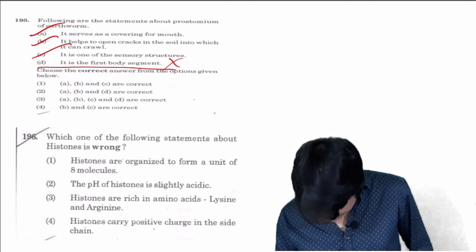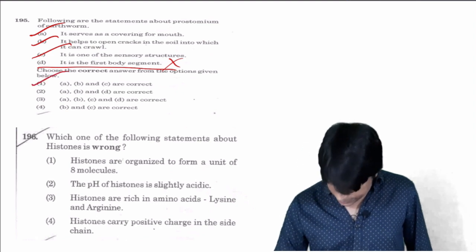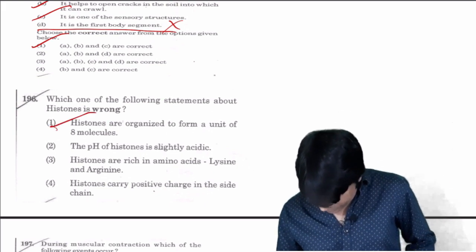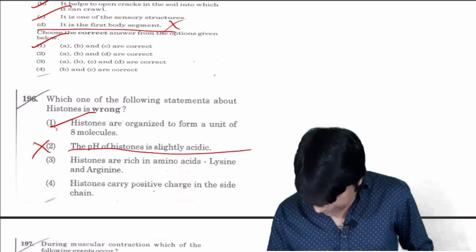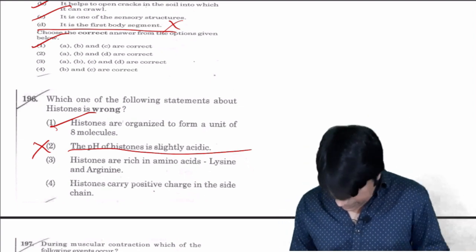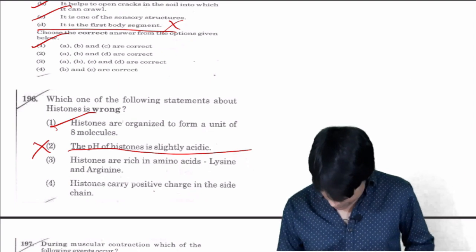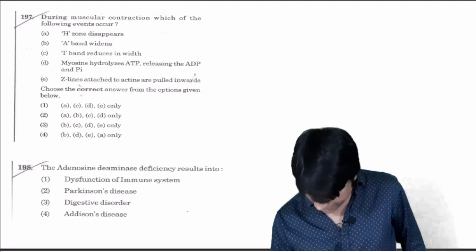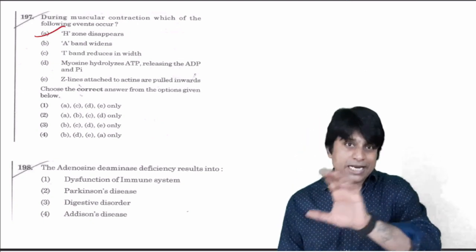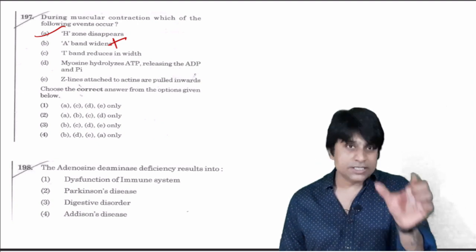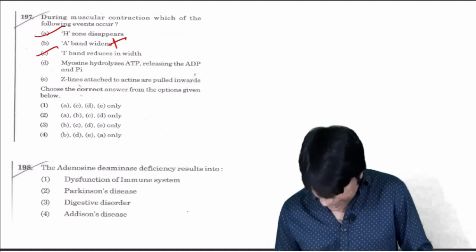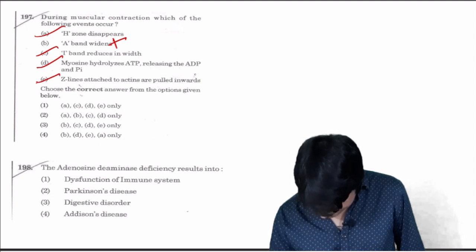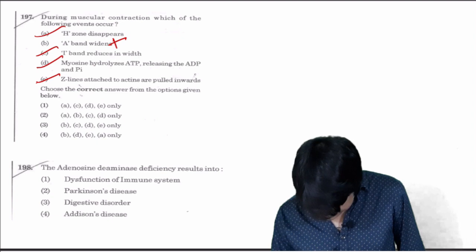Which of the following statements about histones? Histones are organized from a unit of eight molecules, octamer. The pH of histone is slightly acidic, this is wrong. 196 is two, that is the incorrect statement. Histones are rich in lysine and arginine, correct. Histones carry positive charge, correct. During the muscular contraction which events occur? H zone disappears, correct. A band widens, there is no change in the A band, this statement is wrong. I band reduces in its width, correct. Myosin releases ADP and inorganic phosphate, right. Z lines pull inwards, right. Except B, remaining all are correct, so A, C, D, E only. 197 is one.